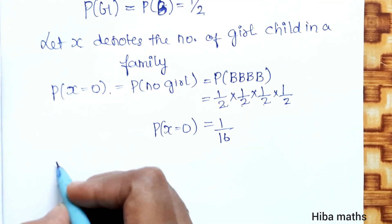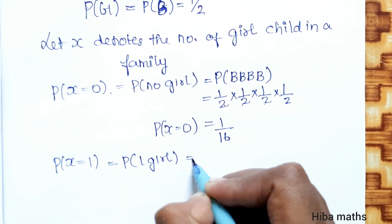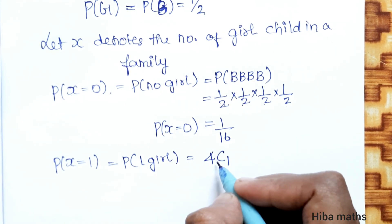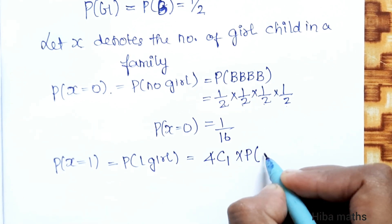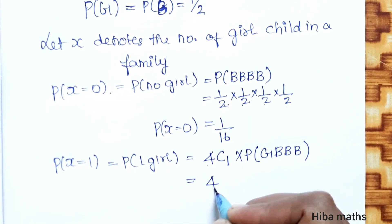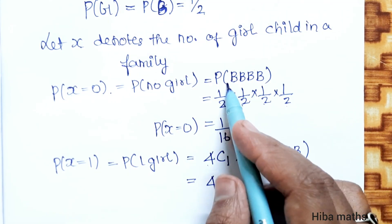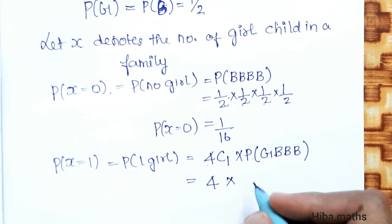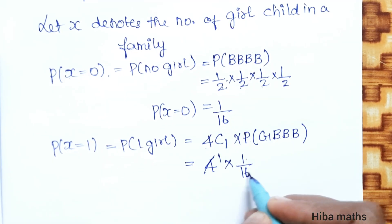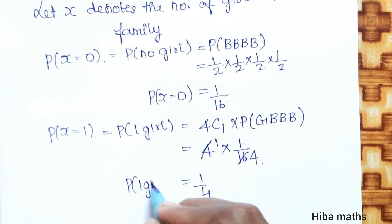Next, P(X = 1): probability of exactly 1 girl. Using the binomial formula: 4C1 × (1/2)^1 × (1/2)^3. 4C1 = 4, and (1/2)^4 = 1/16. So 4 × (1/16) = 4/16 = 1/4. Therefore P(X = 1) = 1/4.